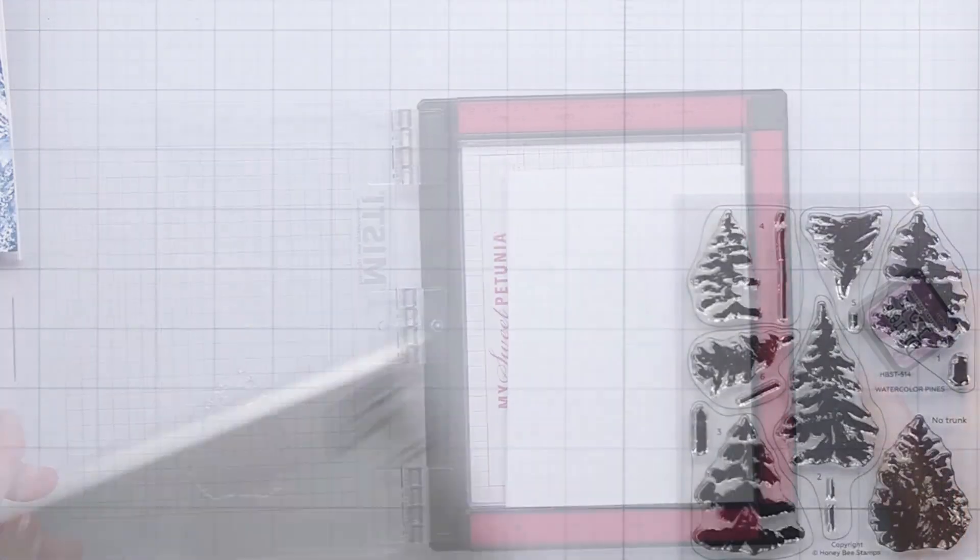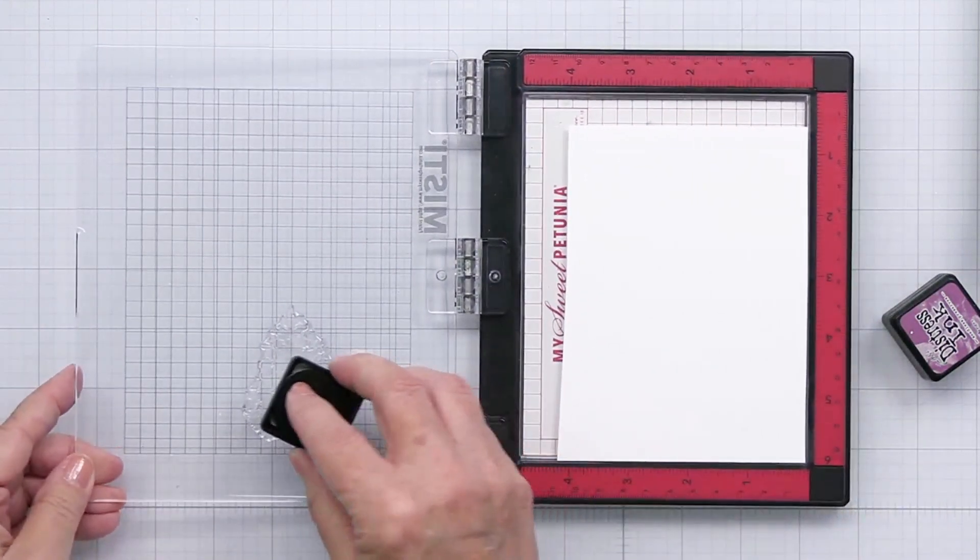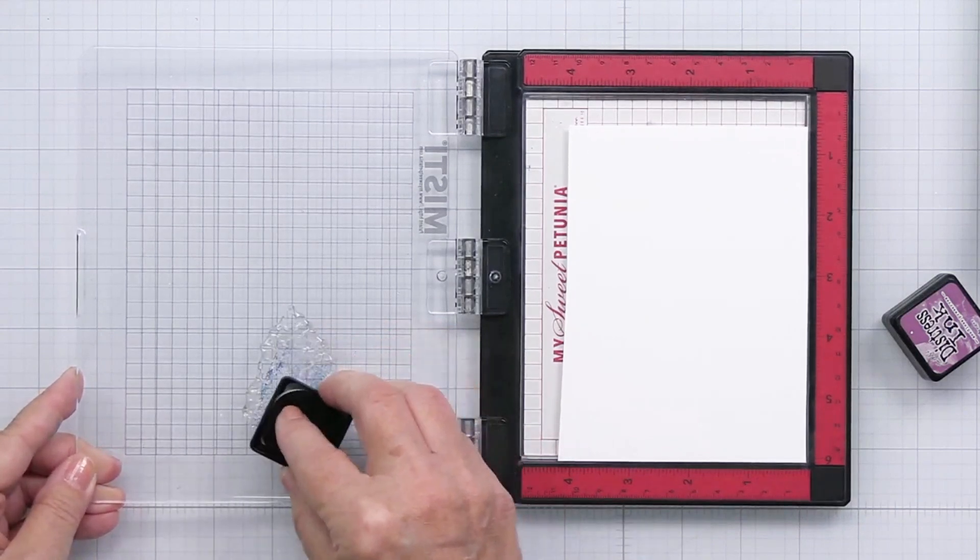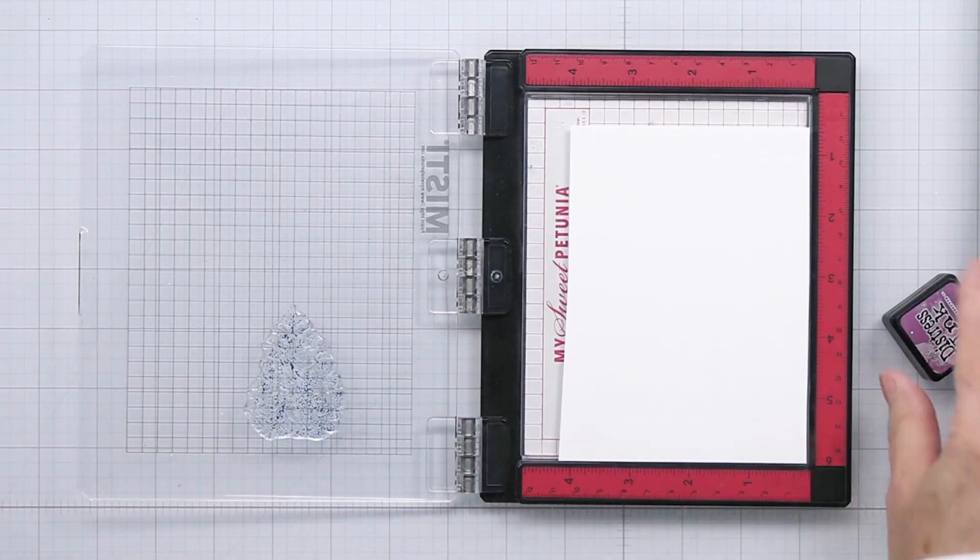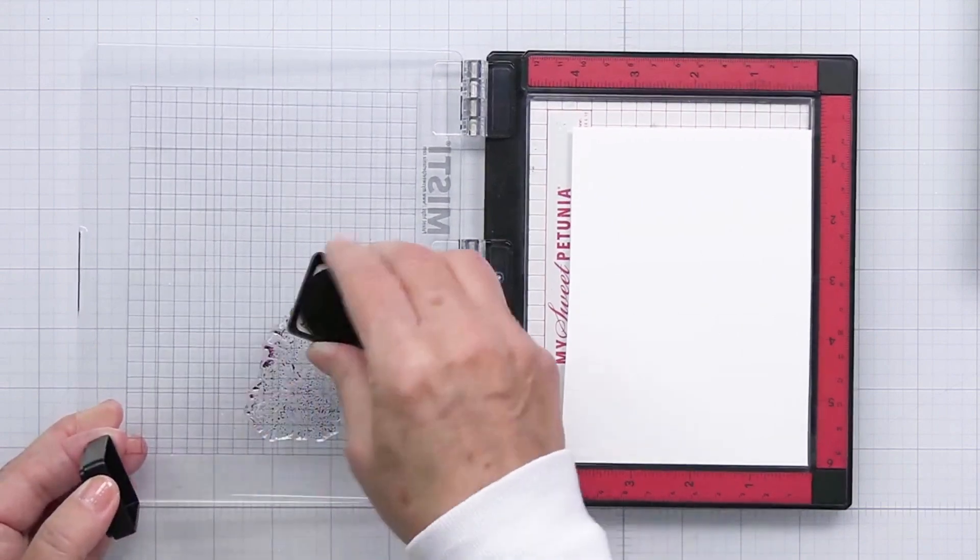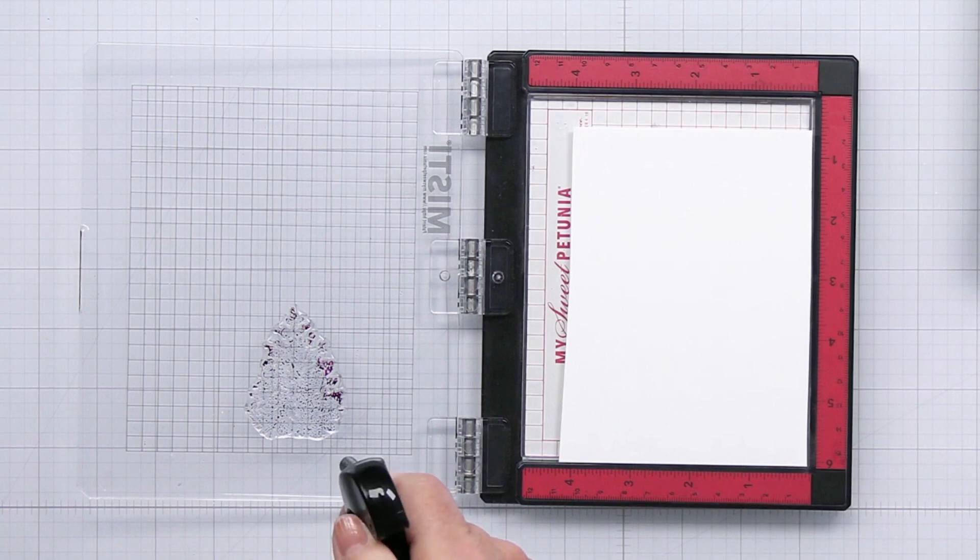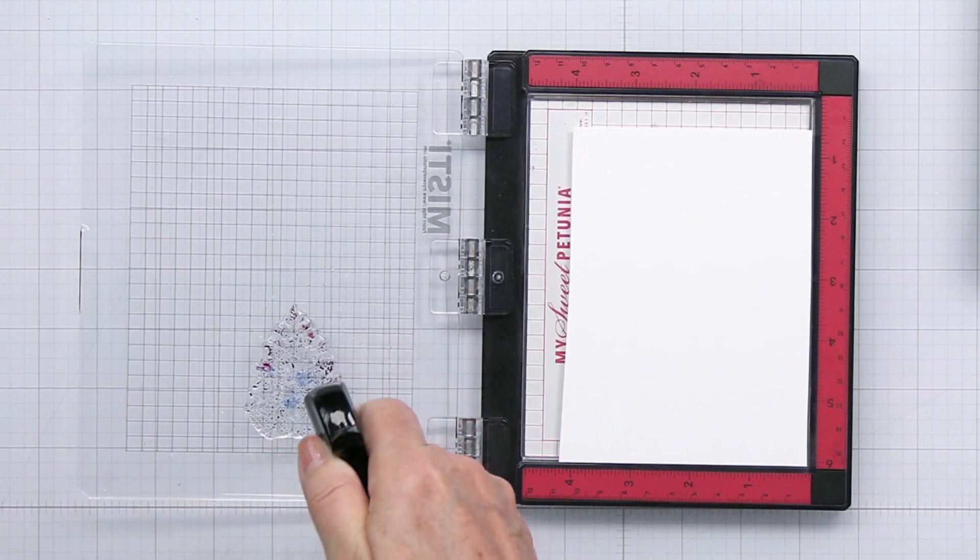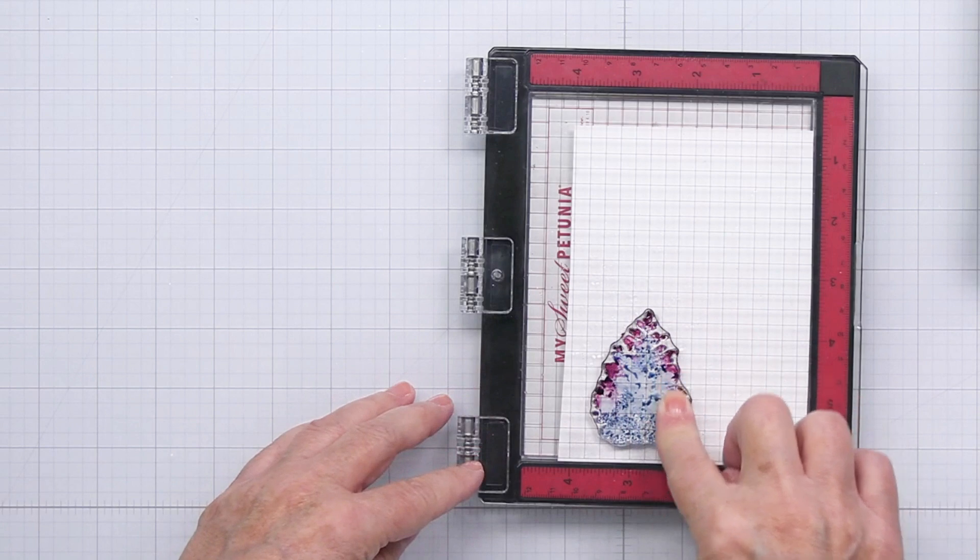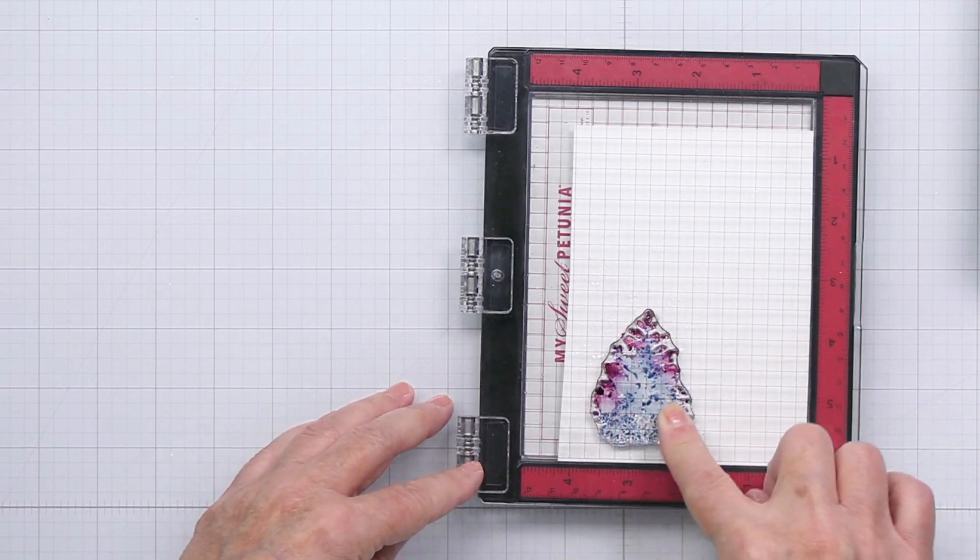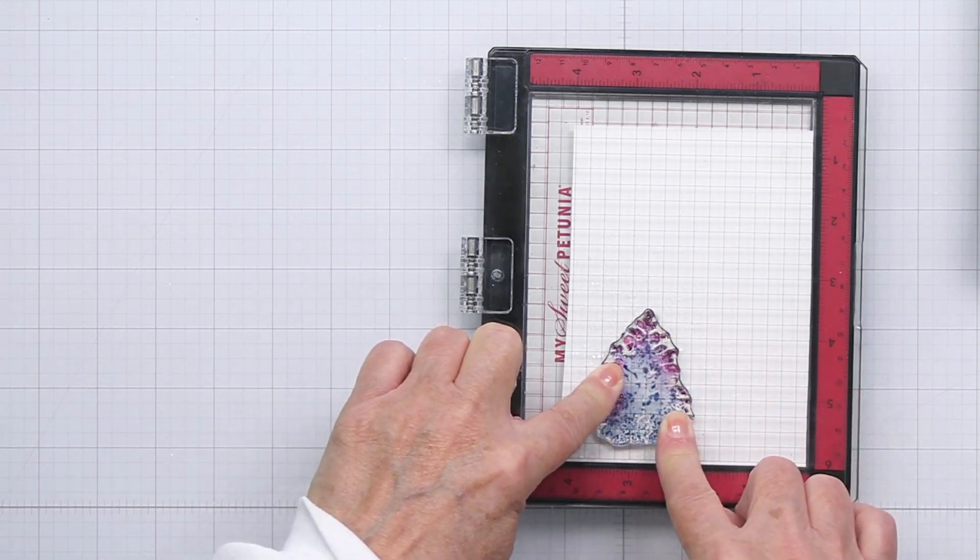Now I'm going to be using some heavy stock paper from Ranger, a really nice bright white paper that will take a little bit of moisture. I'm taking my watercolor pines stamp set and inking up the first stamp with some Stormy Sky Distress Ink, then following with a little bit of Seedless Preserves Distress Ink around the edge of the pine tree. Now I've spritzed it with water and I'll give that a nice press onto that heavy stock paper, giving it a second to absorb into the paper before I lift the stamp off.